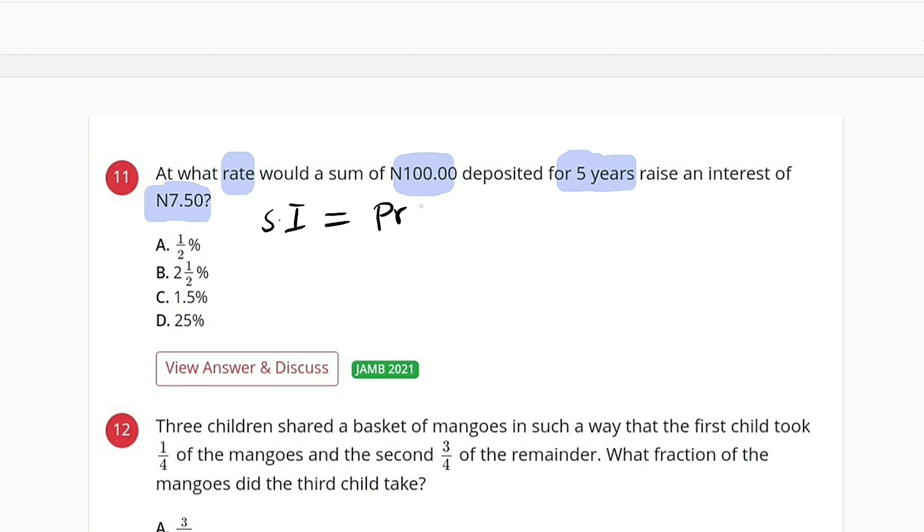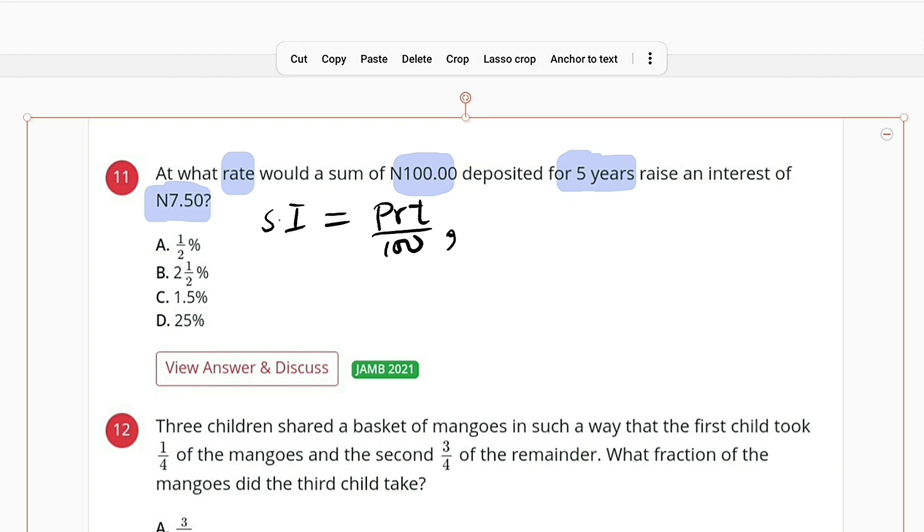Simple interest equals principal times rate times time divided by 100. But the interest is given already from the question. This is an objective question, remember, you don't have to write everything.